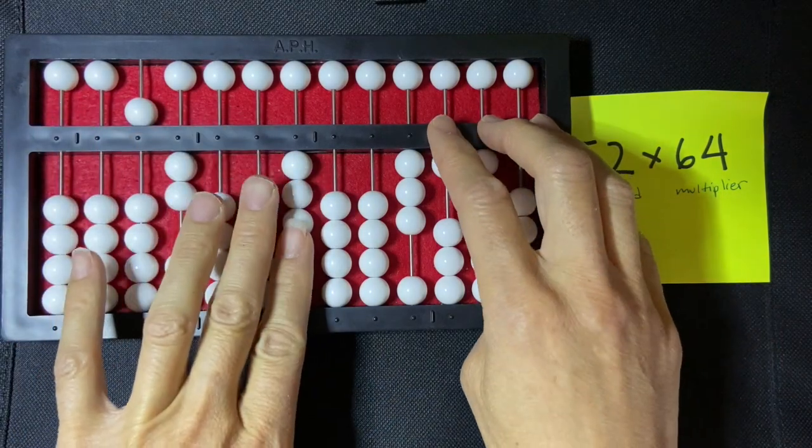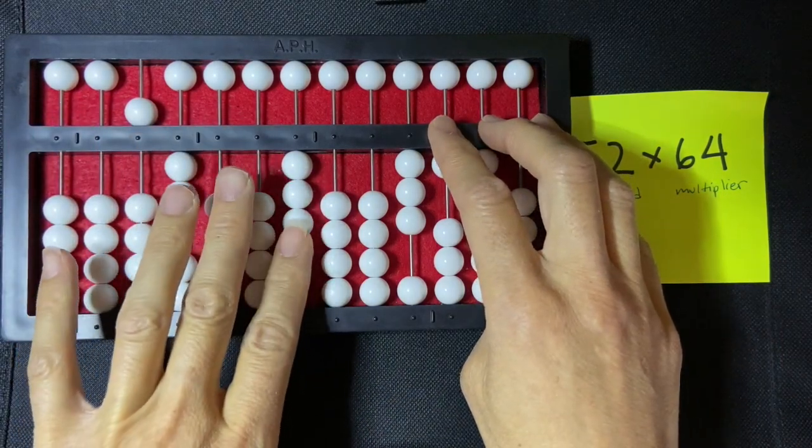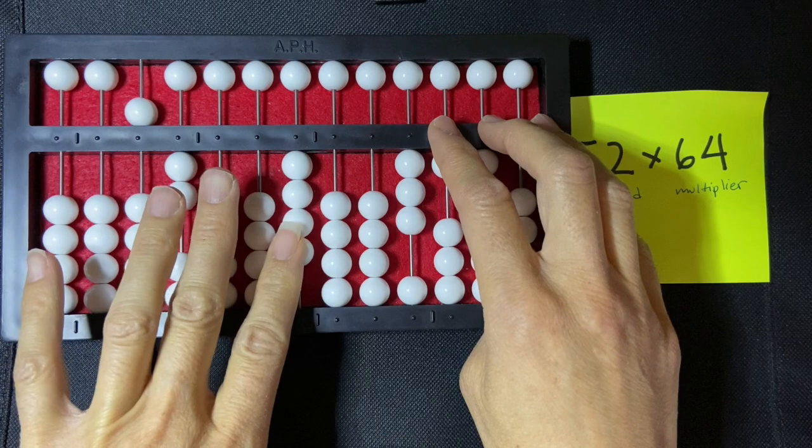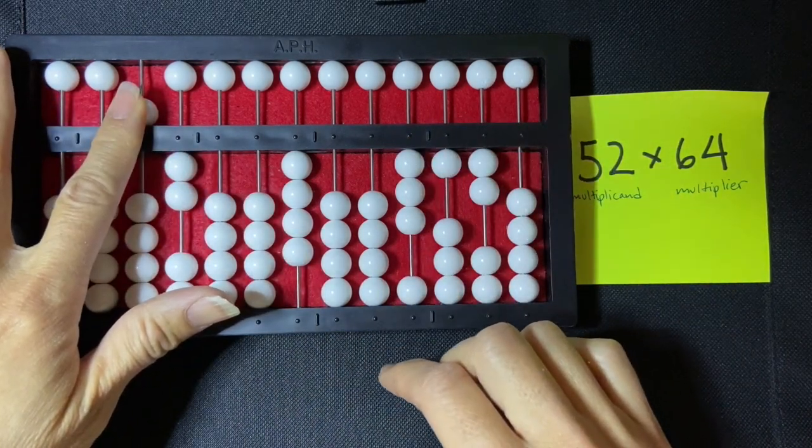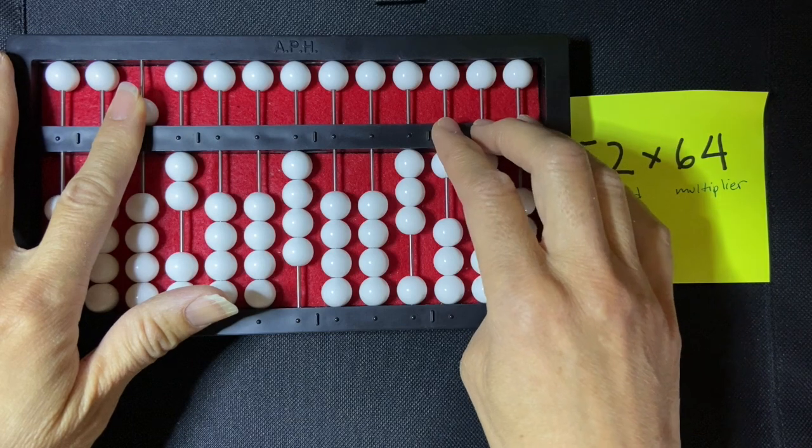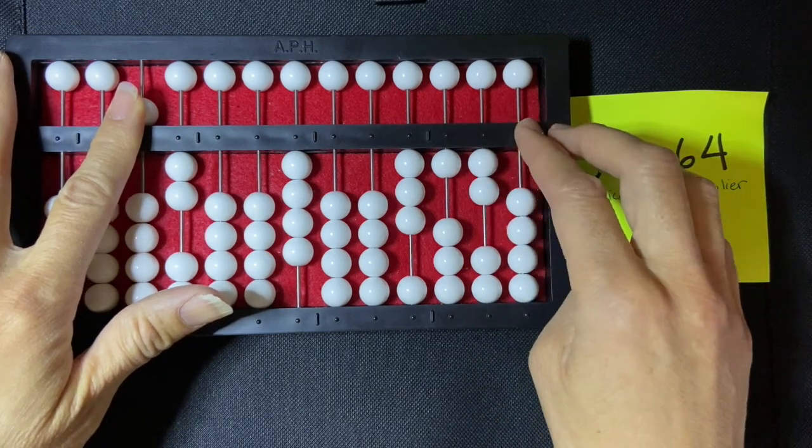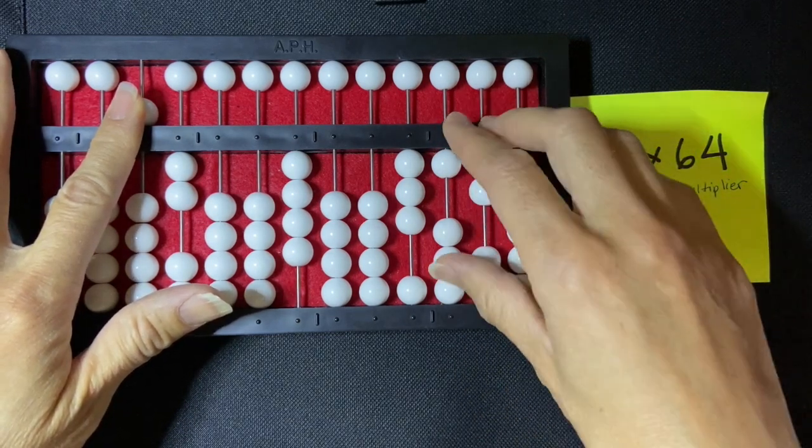I'm going to move over to the unit rod of my multiplier and multiply 4 times 50. 4 times 50 is 200, so I'm going to see, can I set that directly on my abacus? Yes, I can. 200.